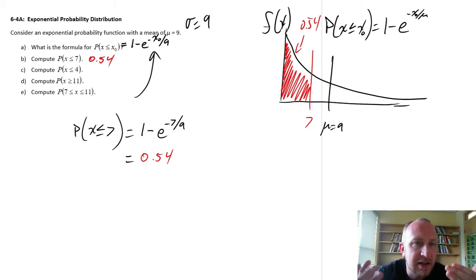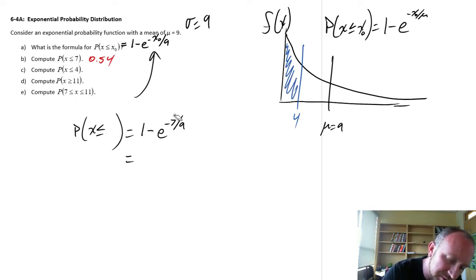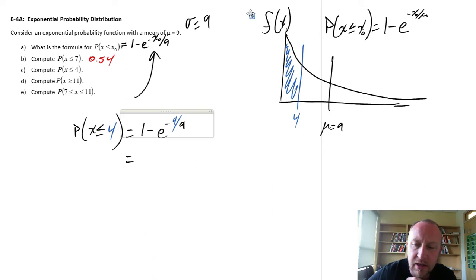Moving on, same calculation, but now our value of interest is 4. So instead of 7, let's get rid of all this. Now I'm going to be looking at 4, so a little bit further in. And now we want to calculate this area. So the calculation is the same, I'm just going to change our numbers. This is 4, this is negative 4 over 9.